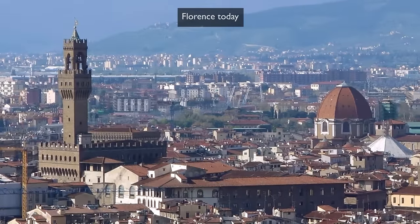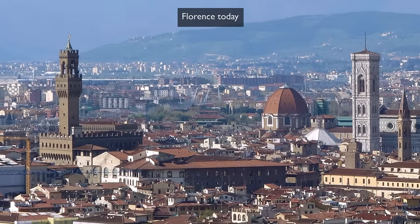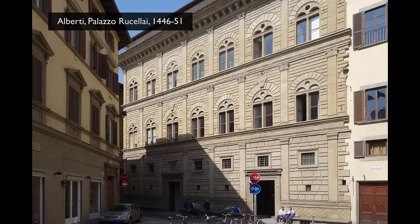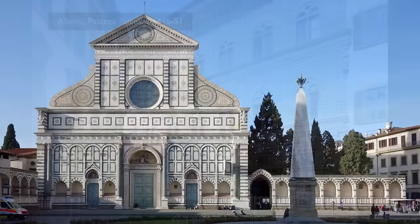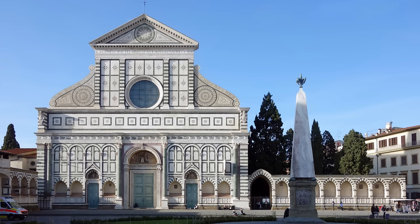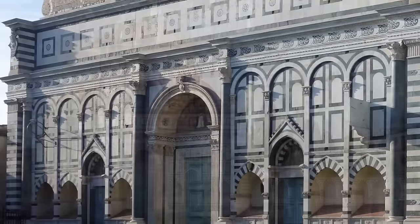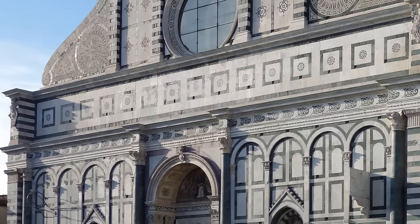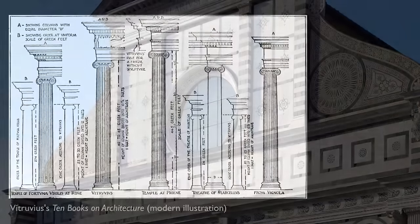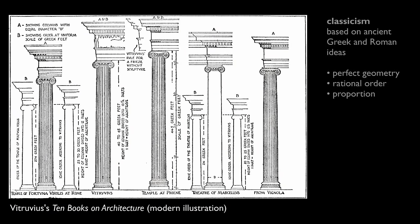Alberti is coming here in the mid-15th century and his patron is Giovanni Ruccellai, for whom he also designed a palace just a few blocks away. Ruccellai inherited the patronage rights to this church, but he inherited it from a family that had already begun to design the facade. Alberti had some serious problems here because he was a classicist — he wanted his architecture to conform to the ideals of classical beauty, based on perfect geometry, rational order, proportion, and the rules of architecture handed down from ancient Rome via the architect Vitruvius.